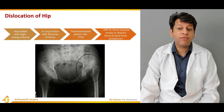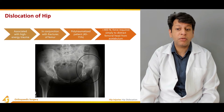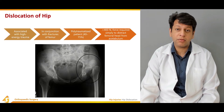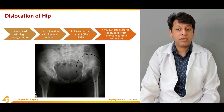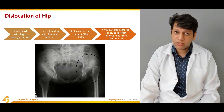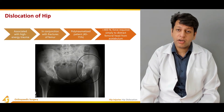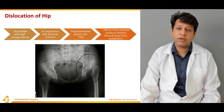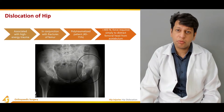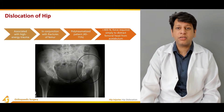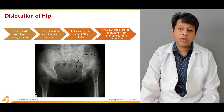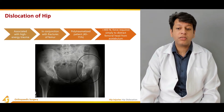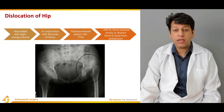Greater than 400 newtons of force is required to distract the femoral head from the acetabulum. So whenever there is a dislocation of the hip, the mechanism must have involved high energy trauma. Very rarely can trivial trauma precipitate such an event, especially in a young individual.